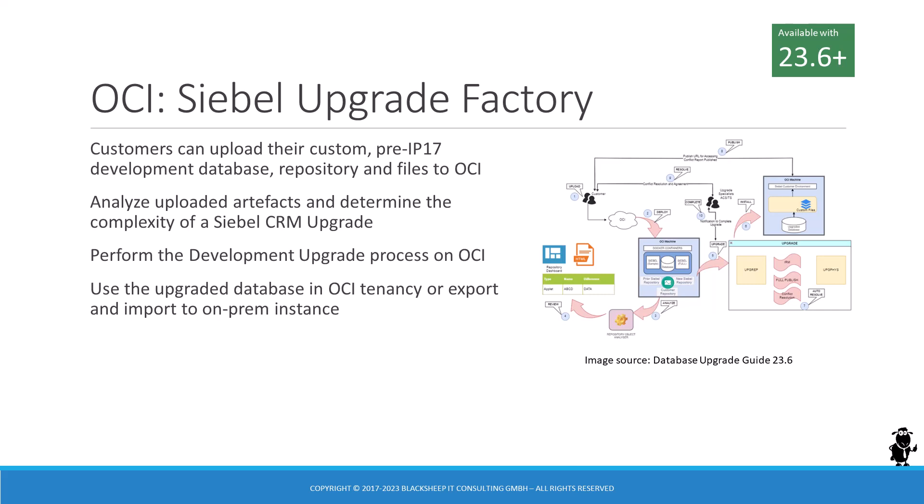Once SCM with Upgrade Factory is deployed on OCI, customers can upload artifacts gathered from a pre-IP 17 development environment — such as database export files, web template files, and so forth — to Oracle cloud storage. Then, via REST calls, a series of processes are launched that create a development database on OCI, analyze the level of effort for the upgrade, and conduct the actual development upgrade, also referred to as UPGREP, IRM, and UPGFIS. The result is a development database on OCI ready for post-upgrade configuration. Customers can use the OCI instance or download the result for on-premises use. Upgrade Factory supports Siebel CRM upgrades from as early as Siebel 8 to the latest Siebel CRM version.